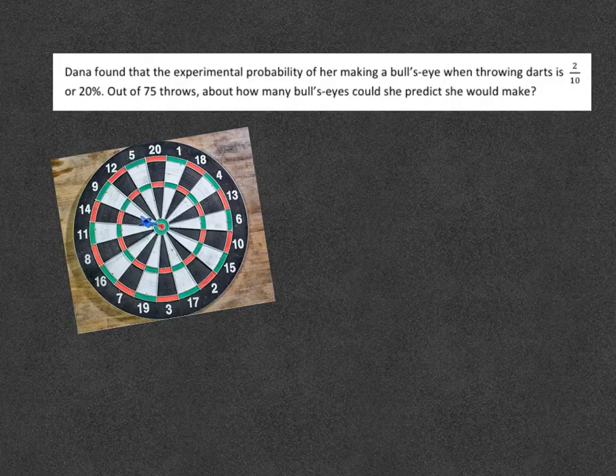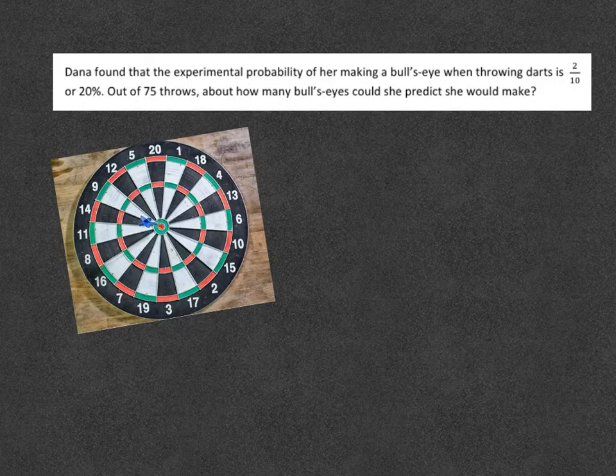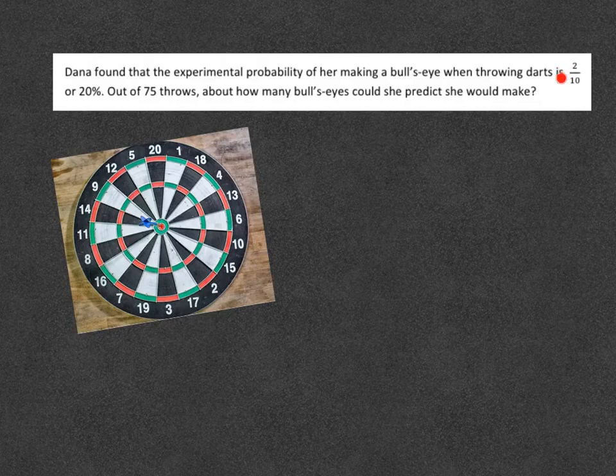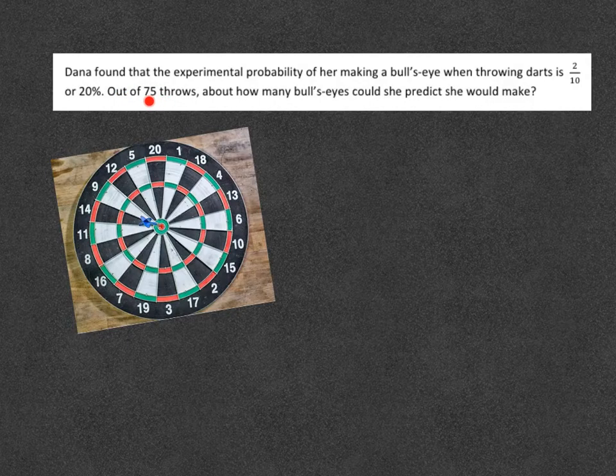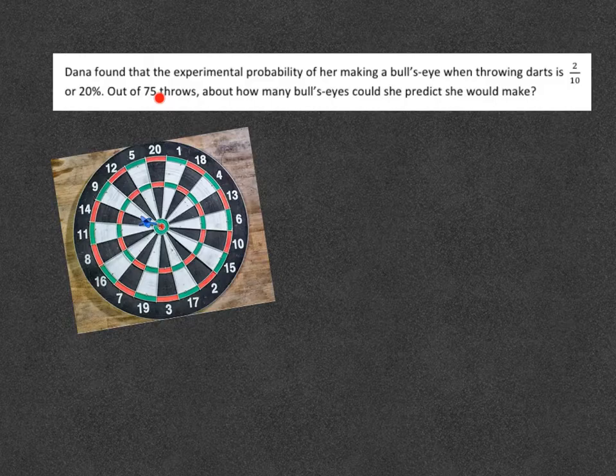So she makes a bullseye 20% of the time. Out of 75 throws, about how many bullseyes could she predict to make? What we're going to do is, normally she makes it two out of ten times, and instead of only going ten times, it says if she shoots or throws 75 arrows, how many times should she get right here in the center to make a bullseye?